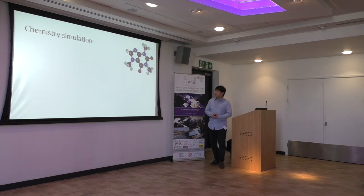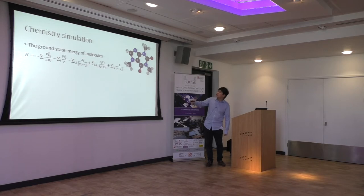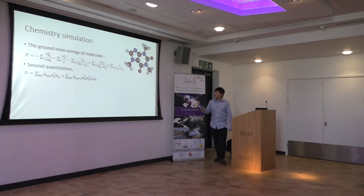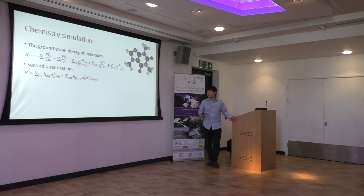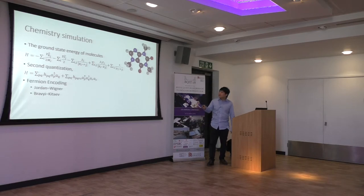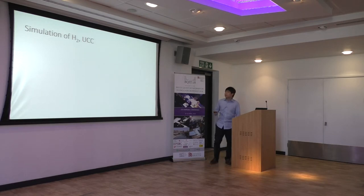Here we show the chemistry simulation. The first-quantized Hamiltonian for a molecule includes nuclear interaction, electron interaction, and nuclear-electron interaction terms. Following a standard procedure, we convert this first-quantized Hamiltonian into a second-quantized Hamiltonian, where H depends on the distance between the two nuclei, and a and a-dagger are the annihilation and creation operators for fermions. We then use a standard fermionic encoding method to convert this Hamiltonian into a qubit Hamiltonian.